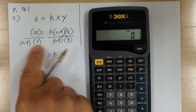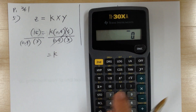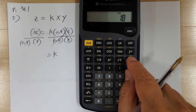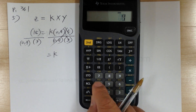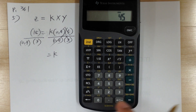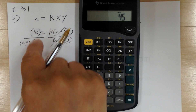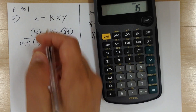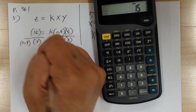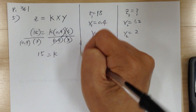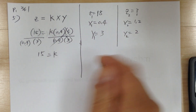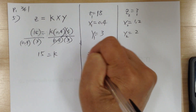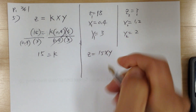When you use your calculator, everything on the bottom you push divide. So go 18 divided by 0.4, push equals, then divide by 3. So k equals 15. Once you find k equals 15, update the equation: z equals 15xy.